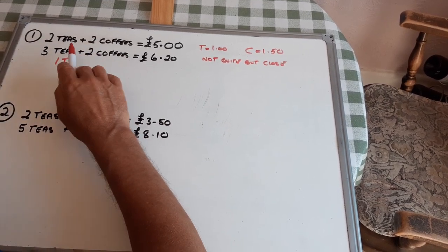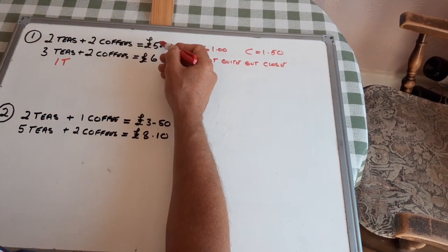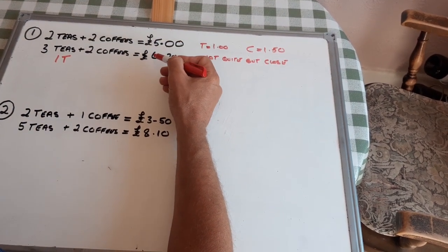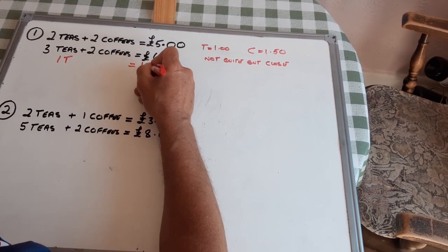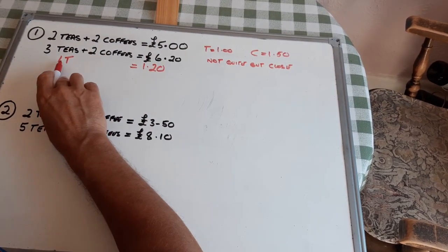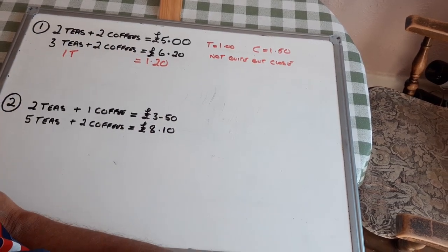Two coffees take away two coffees is nothing. £6.20 take away £5 is £1.20. So, my tea costs £1.20.